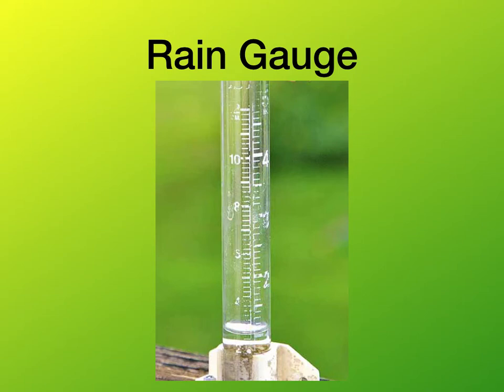The first weather tool that we're going to discuss is the rain gauge. Most of us probably already know what a rain gauge is, but we didn't realize that it was a weather tool — you might even have a rain gauge in your yard. A rain gauge is used to measure the amount of rain that has fallen. If we look closely at the picture of the rain gauge, we can see one side is inches and the other is centimeters.